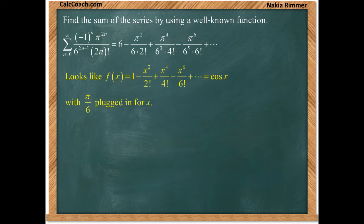So it's most likely going to be some kind of a cosine x. It seems like we have powers of pi in the numerator, powers of 6 in the denominator. So perhaps pi over 6 is plugged in, but there's an issue with that.